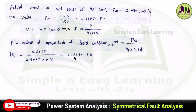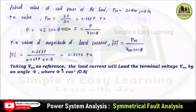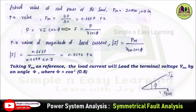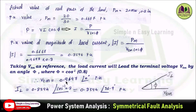Taking V_TM as the reference, the terminal voltage across the motor is reference. The load current leads the terminal voltage by angle φ, where φ equals cos⁻¹(0.8). Since the power factor cos φ is 0.8, φ equals cos⁻¹(0.8) = 36.9°. So V_TM is the reference and I_L leads the voltage by an angle of 36.9°.